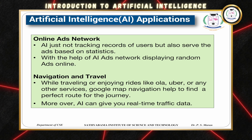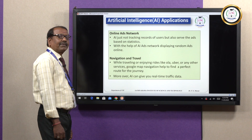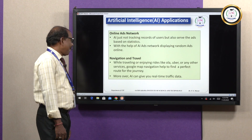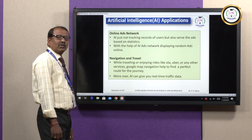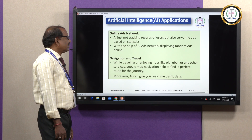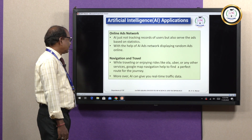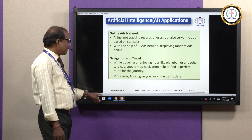For online advertisement networks, AI not only tracks records of users but also serves advertisements based on statistics. With the help of AI, advertisement networks display targeted advertisements online. For navigation and travel, while using services like Ola, Uber, or Google Maps, navigation helps to find a perfect route for the journey using artificial intelligence techniques. Moreover, AI can give you real-time traffic data.